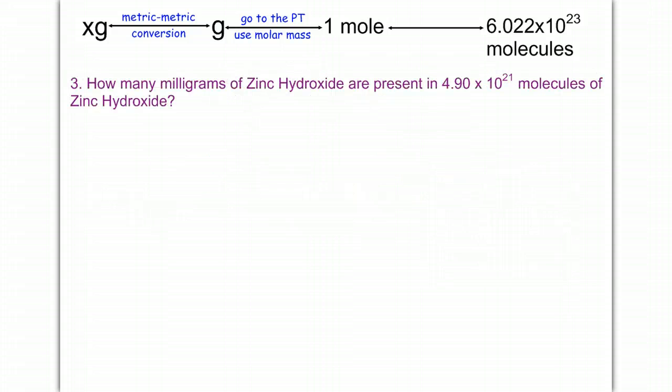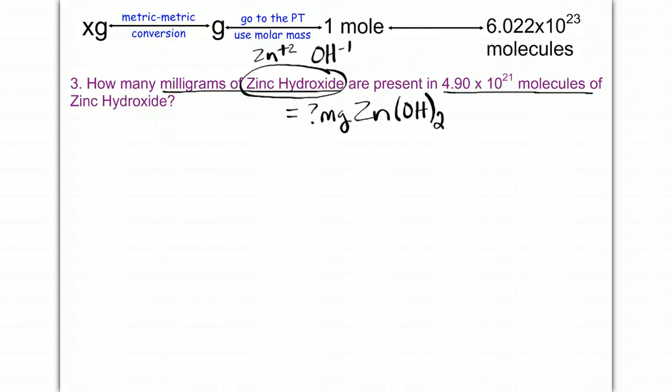Okay, let's try one more. How many milligrams of zinc hydroxide? So I'm looking for milligrams of, I need the formula for this. So when I have to calculate my molar mass, I know what to go to the chart and look for. Zinc is Zn plus 2. Hydroxide is OH minus 1. I'm going to switch the charges and have one zinc and two hydroxides. And yes, it has to go in parentheses because it is a polyatomic, and I need more than one.